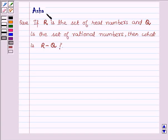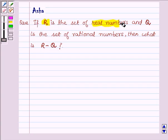Hi and welcome to the session. I am Asha and I am going to help you with the following question which says if R is the set of real numbers and Q is the set of all the rational numbers, then what is R minus Q?